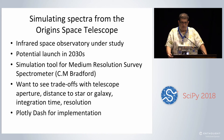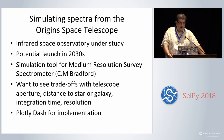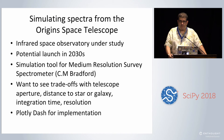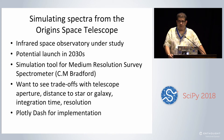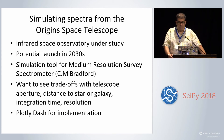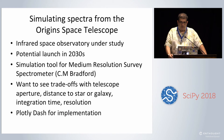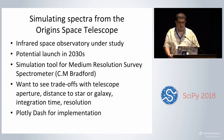I'll talk about a tool for simulating spectra from the Origin Space Telescope. Origin is an infrared space observatory planned for the far future, under study along with three other concepts by NASA. We wanted to build a simulation tool for the medium resolution spectrometer on that mission, to see trade-offs with telescope aperture, distance to the star or galaxy, integration time, and spectral resolution. We chose Plotly-Dash for the implementation.